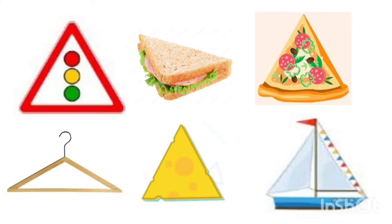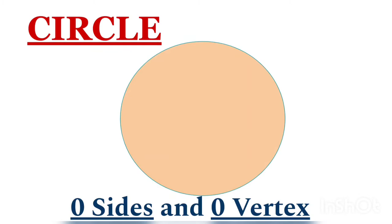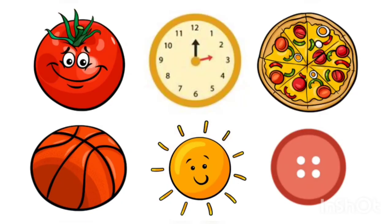Triangle. This is a triangle. It has three sides and three vertices. Let us see some examples of triangle: traffic light, hanger, sandwich, cheese slice, pizza slice, and boat.